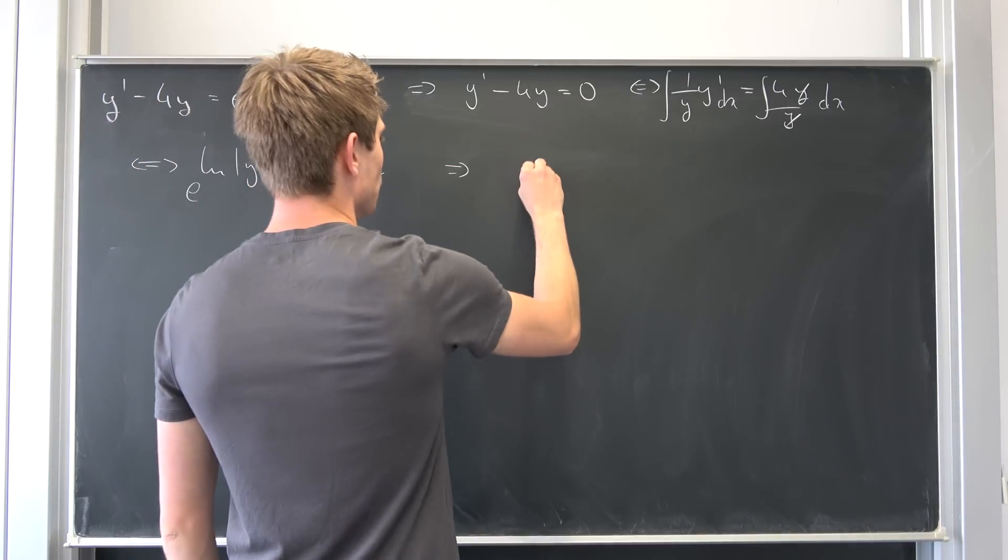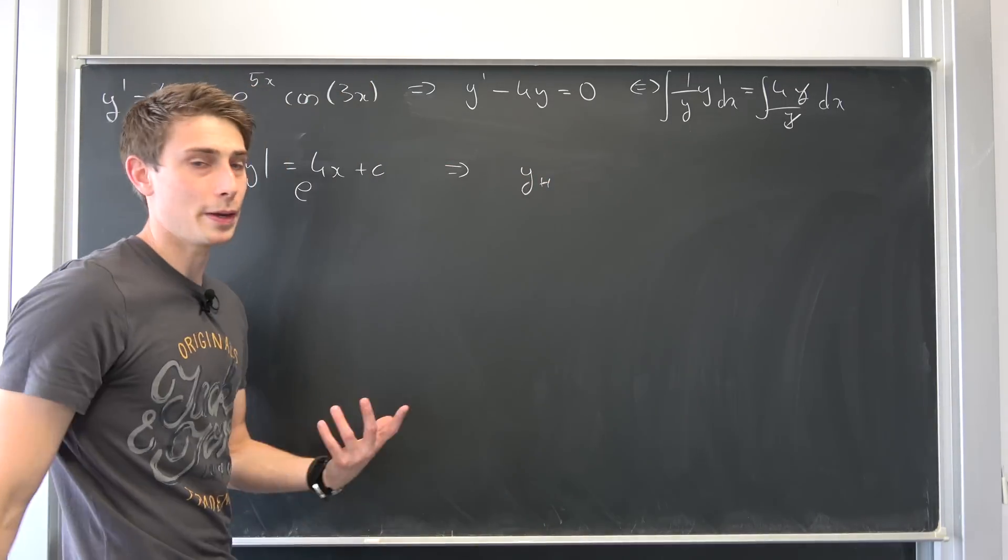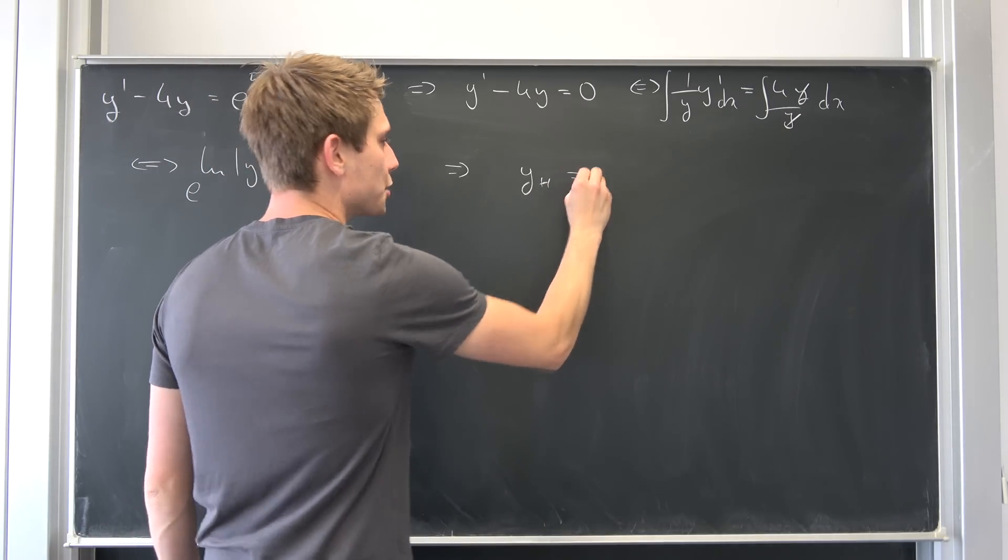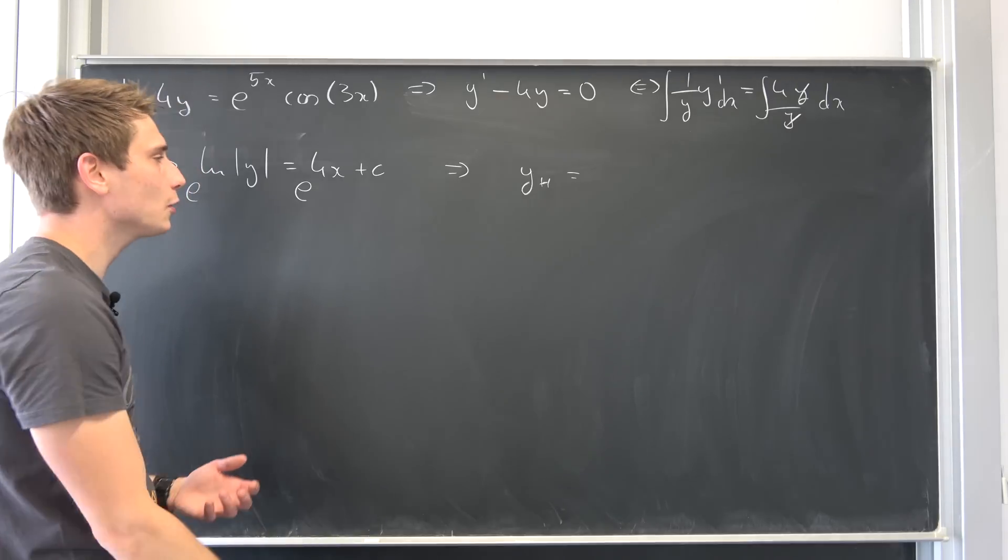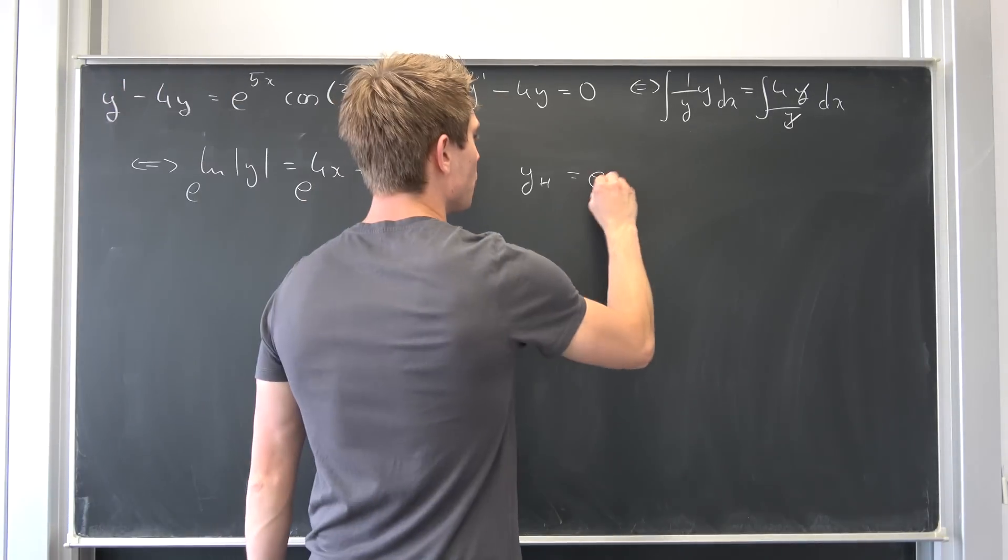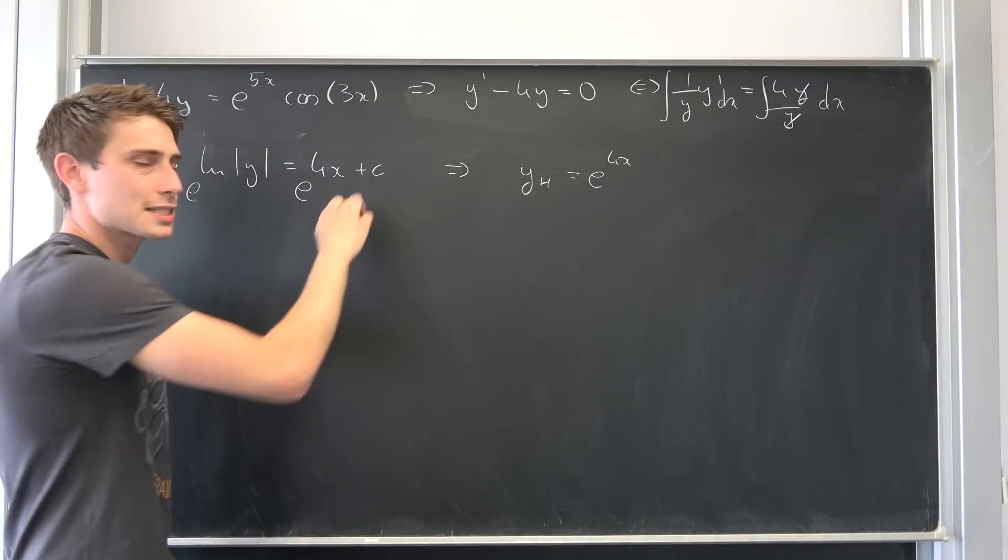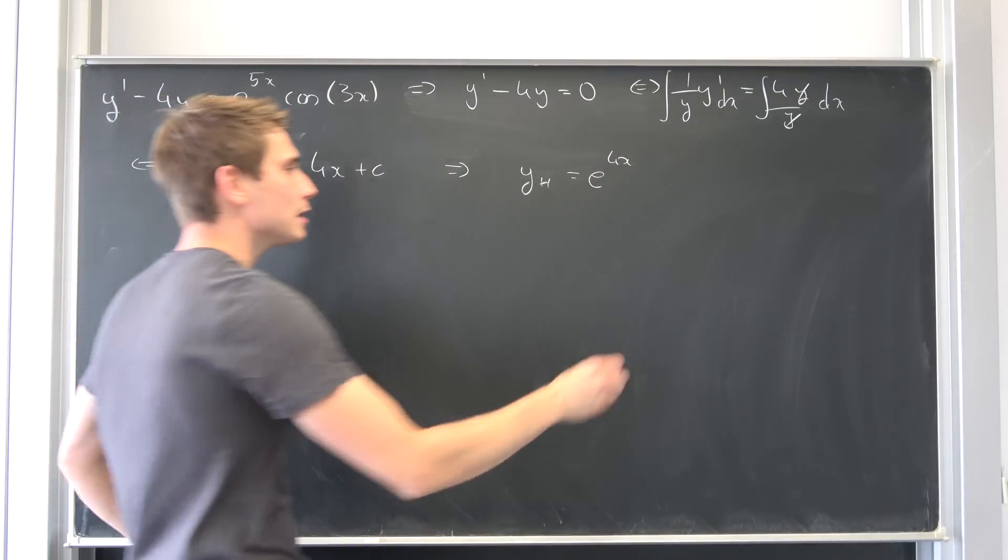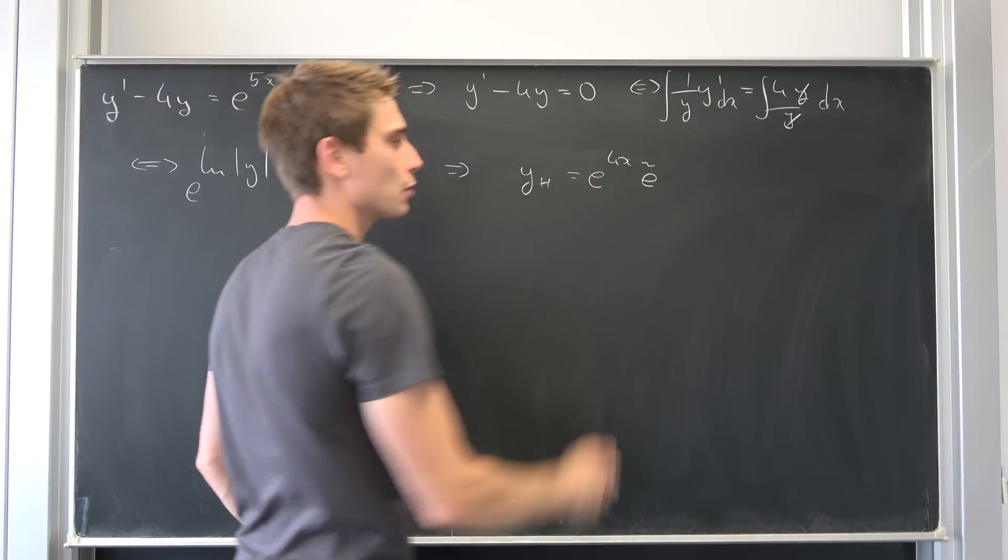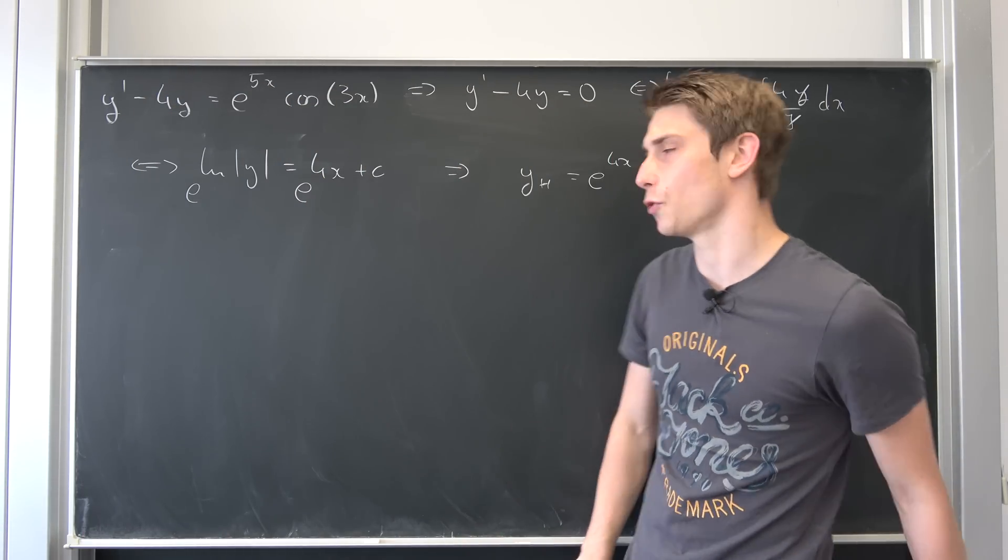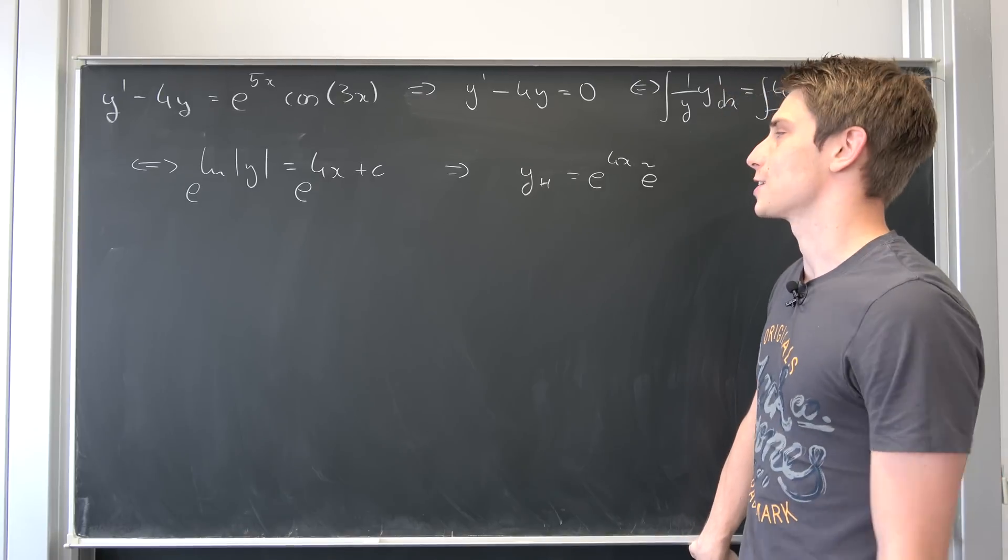And then we get the final result for our y. So that means we end up with the homogeneous or complementary solution of y. That's why I have this little h here. You can also place a c there if you want to call it complementary. It's going to be e to the 4x on the one hand plus some arbitrary constant c. But we can use this exponential function property to just turn this into another constant e-schlange for example. I know you guys are waiting for this e-schlange to pop up anytime soon.